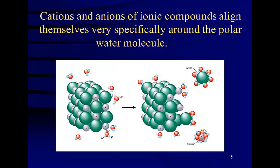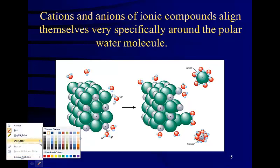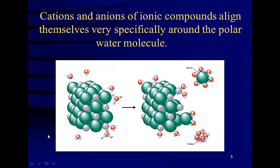Cations and anions of ionic compounds align themselves very specifically around the polar water molecule. This is an example of a salt, and please remember the term salt covers any ionic compound. Cations and anions of ionic compound. So let's pick our usual sodium chloride. So the little gray ones are the sodium.